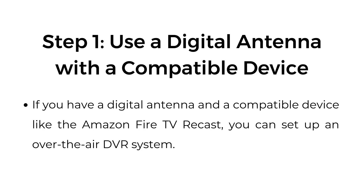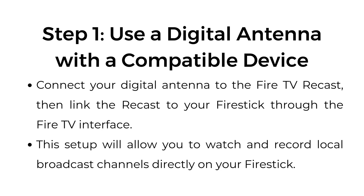Step number one: use a digital antenna with a compatible device. If you have a digital antenna and a compatible device like the Amazon Fire TV Recast, you can set up an over-the-air DVR system. Connect your digital antenna to the Fire TV Recast, then link the Recast to your Fire Stick through the Fire TV interface. This setup will allow you to watch and record local broadcast channels directly on your Fire Stick.